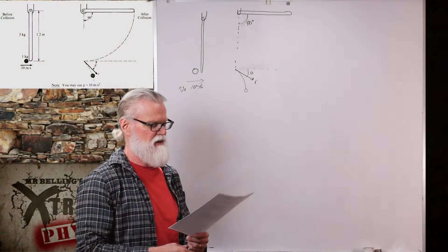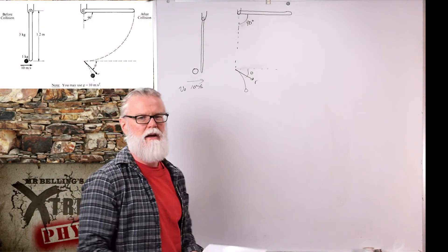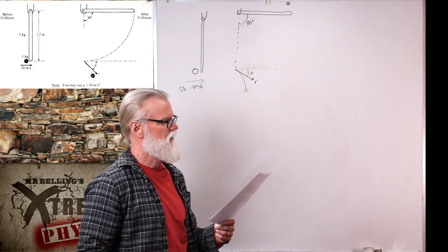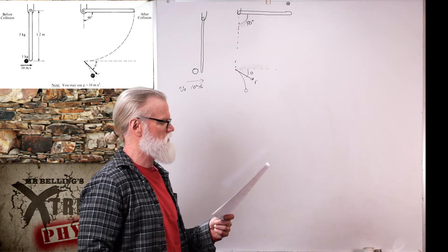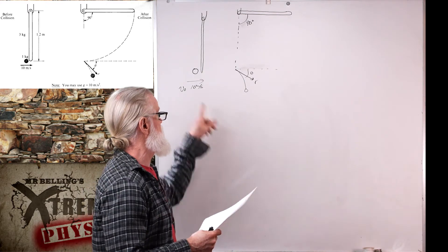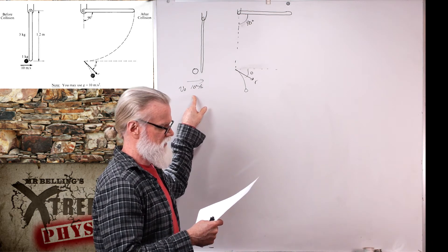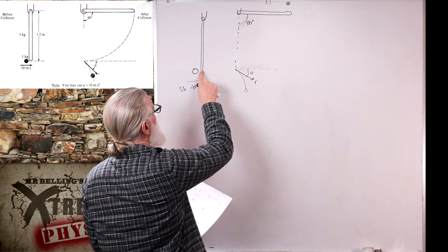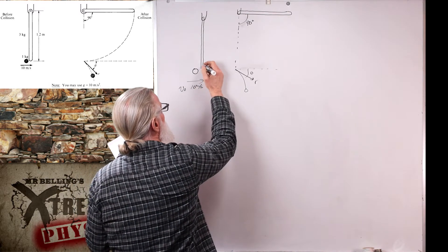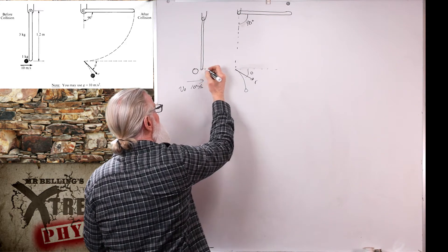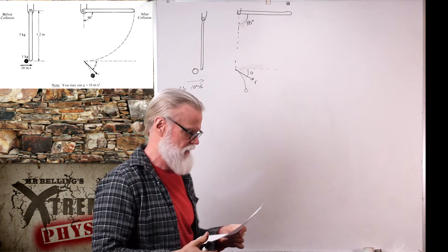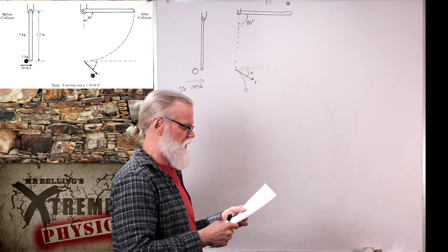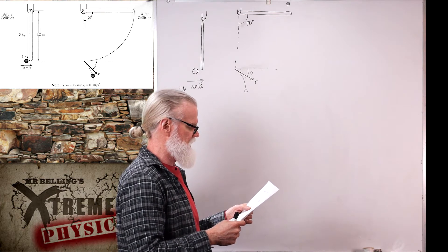Let's take a look at the 1987 free response question from the mechanics portion of the APC exam, question three. We have a one kilogram object moving horizontally with a velocity of 10 meters per second, and it makes a glancing collision — just catches the edge — with the lower end of the bar that was hanging vertically at rest before the collision.